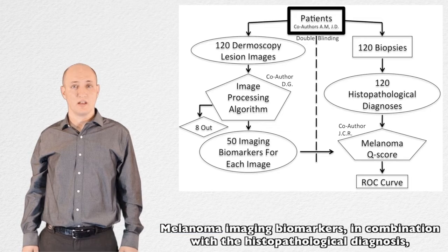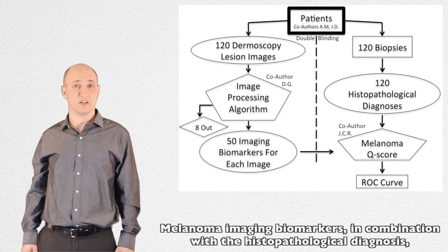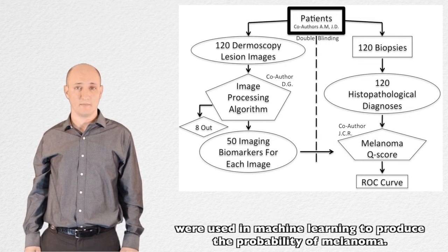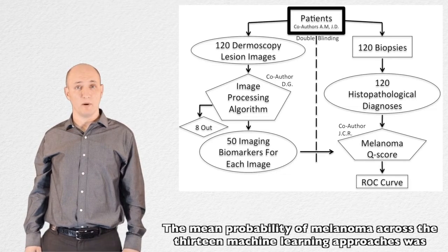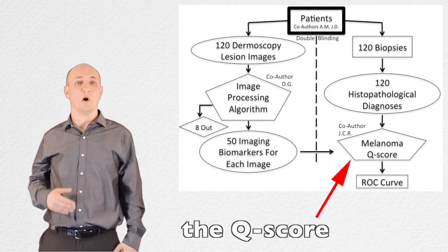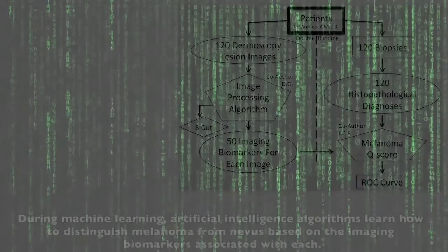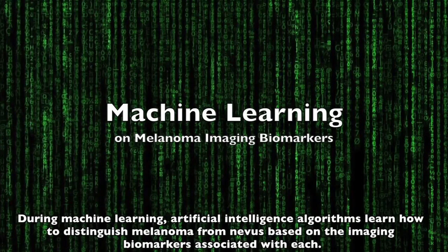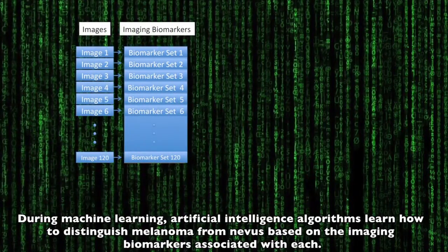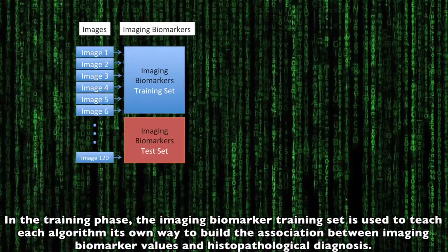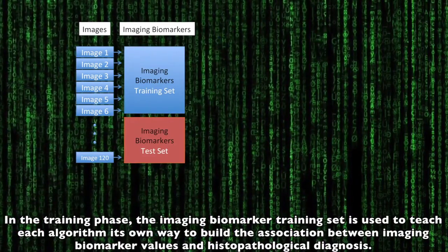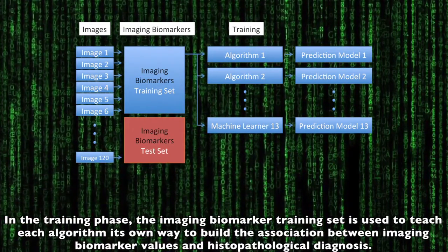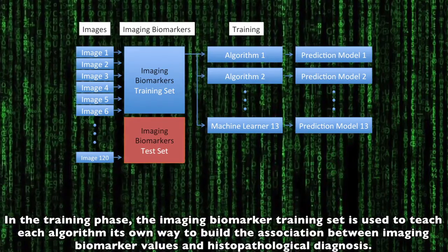Melanoma imaging biomarkers, in combination with the histopathological diagnosis, were used in machine learning to produce the probability of melanoma. The mean probability of melanoma across the 13 machine learning approaches was the Q-score. During machine learning, artificial intelligence algorithms learn how to distinguish melanoma from nevus based on the imaging biomarkers associated with each. In the training phase, the imaging biomarker training set is used to teach each algorithm its own way to build the association between the imaging biomarker values and the histopathological diagnosis.